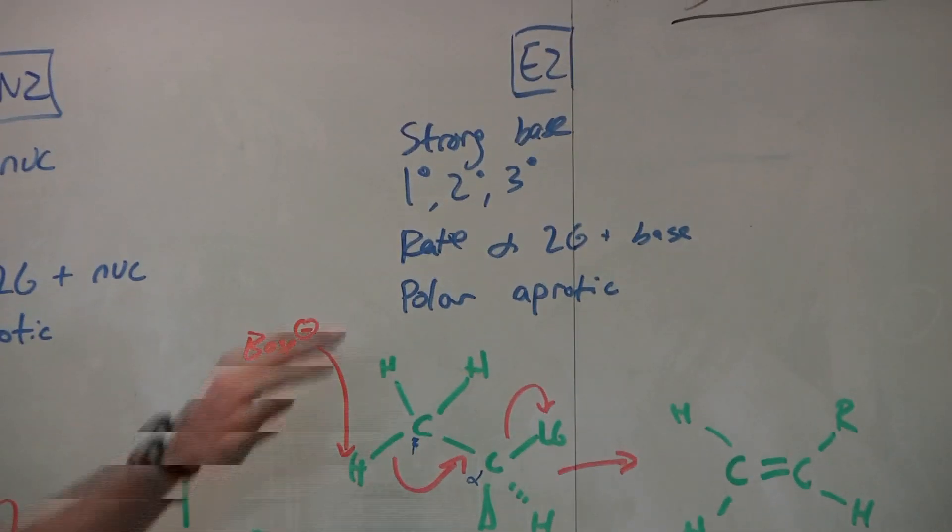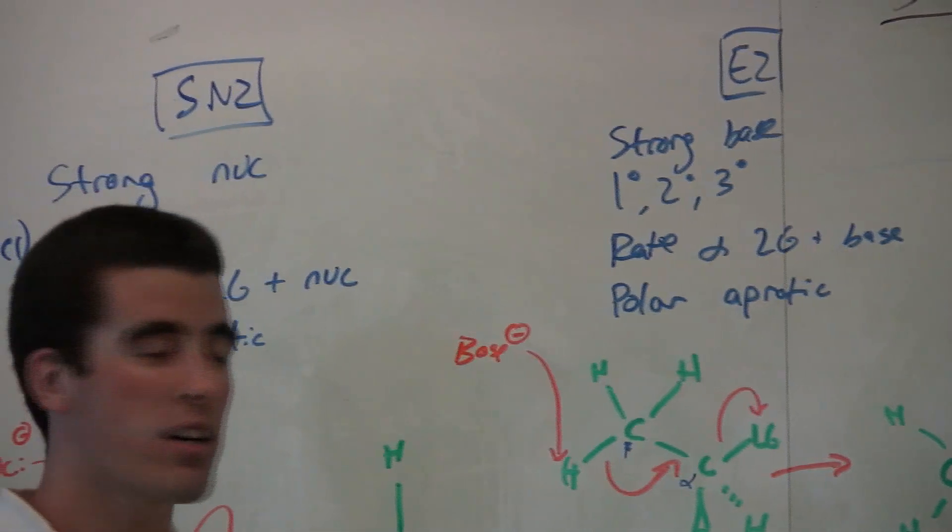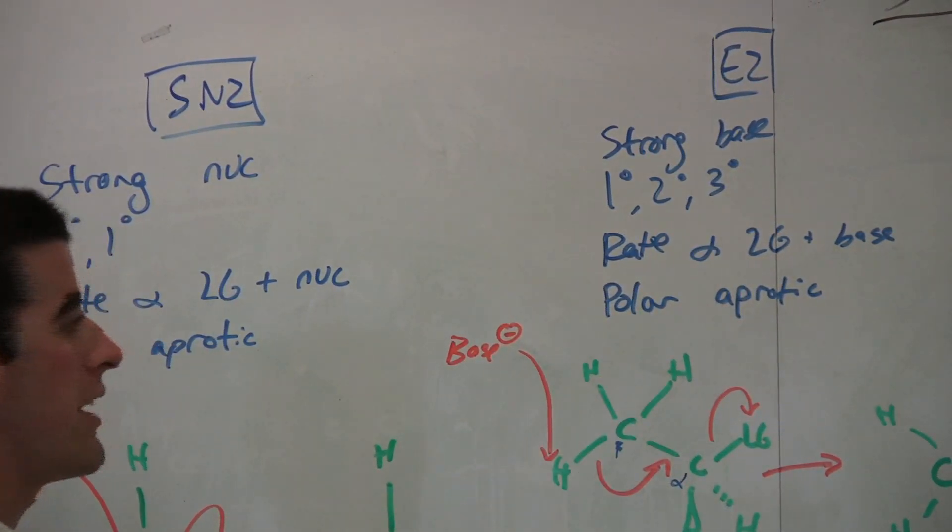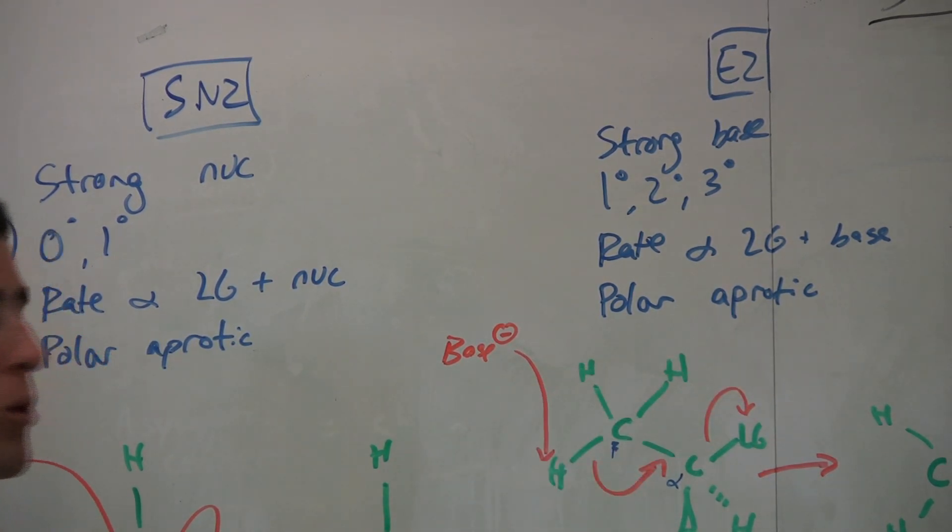What is the characteristic of that? We have a strong base. We can use either primary, secondary, tertiary carbons. Again, the rate is dependent on two things, the leaving group and the base, and best enhanced by polar aprotic solvent.